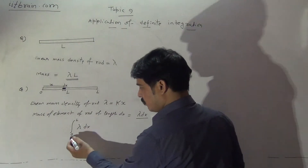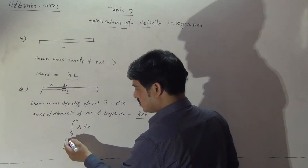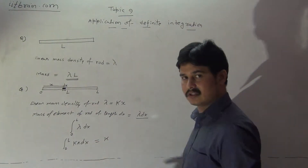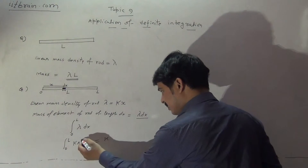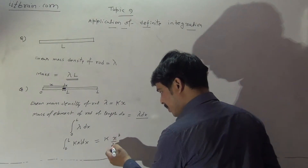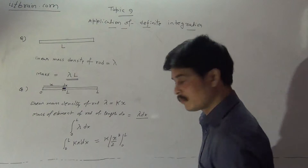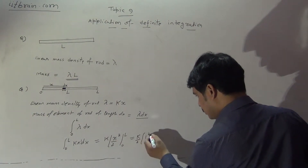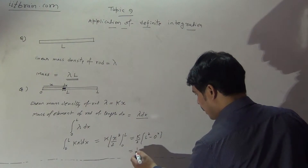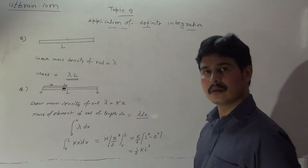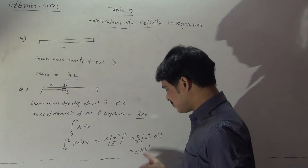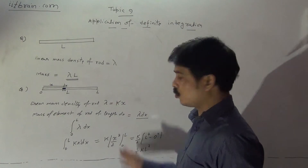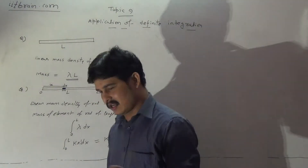The total mass of the rod equals the integral of λ dx from 0 to L. Since λ = kx, this becomes the integral of kx dx from 0 to L. Taking k outside as a constant, we get k times the integral of x dx, which is x²/2. Applying limits 0 to L gives k × L²/2. So the total mass of the rod is ½kL².